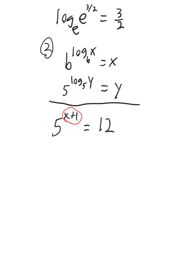So, step 1 will be change this to logarithmic form. So in log form, this becomes log base 5 of 12 is equal to x plus 1. And that gets the x out of the exponent.